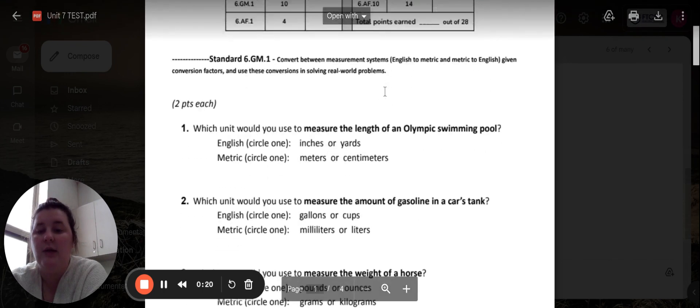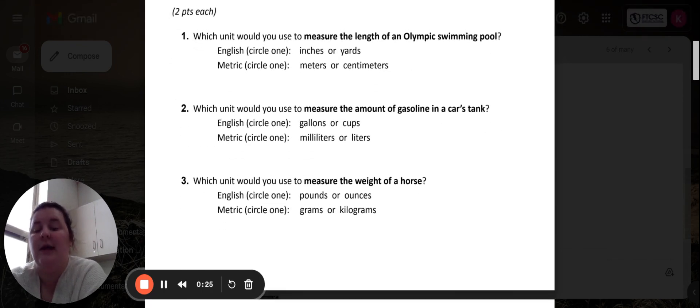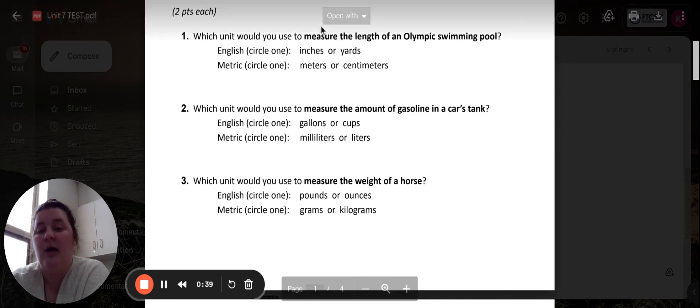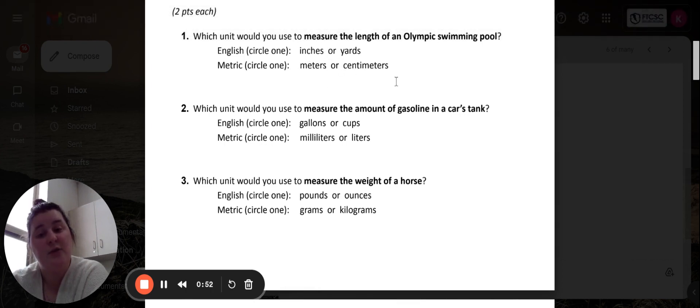So we are going to start with number one. Number one wants you to figure out what unit you would use to measure the length of an Olympic swimming pool. You are going to circle one on each one for the English unit and for the metric unit. So would you use inches or yards and meters or centimeters?